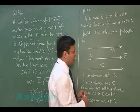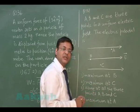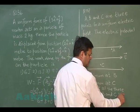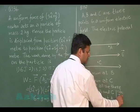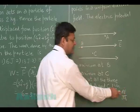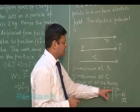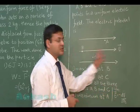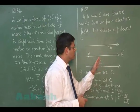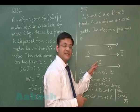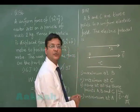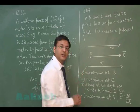To solve this, use the expression E = −dV/dR. The negative sign tells us that the potential decreases as you move in the direction of the electric field. So moving from left to right, potential goes down. The potential will be maximum at B, next lesser at C, and least at A. The correct option is the first one — maximum at B.